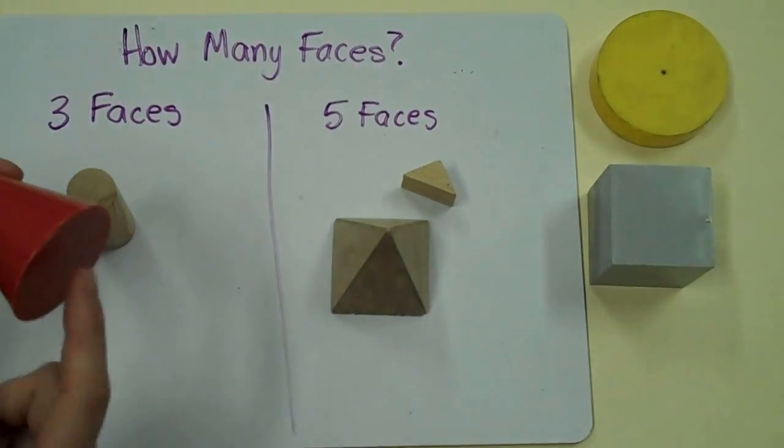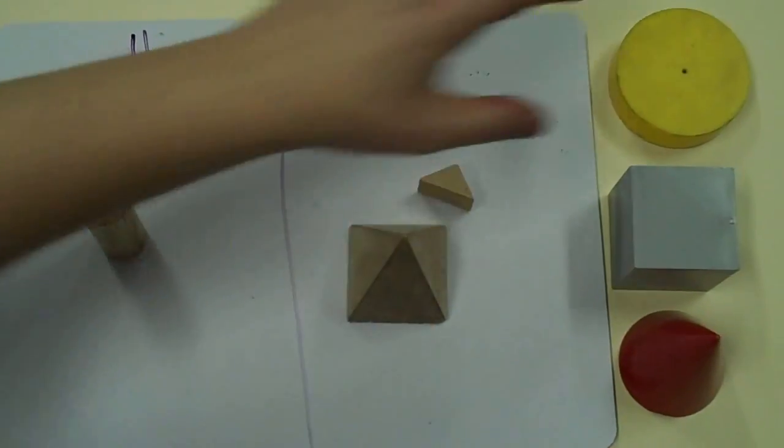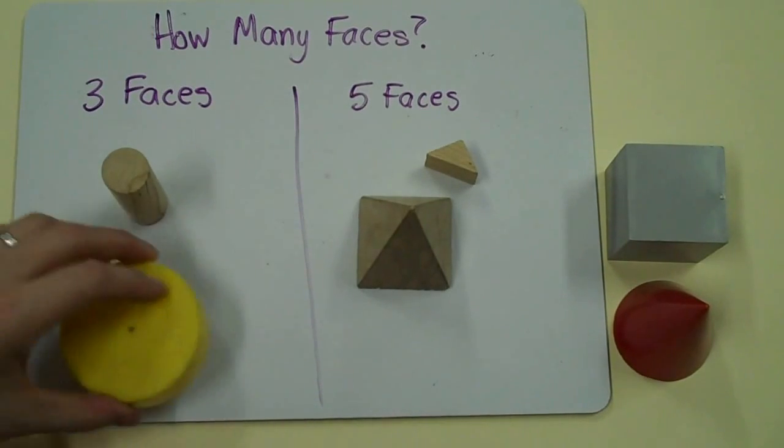A cone only has two faces. It does not belong in either group. But this is a cylinder, and I already know cylinders have three faces.